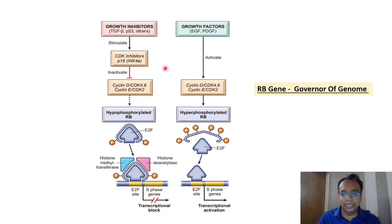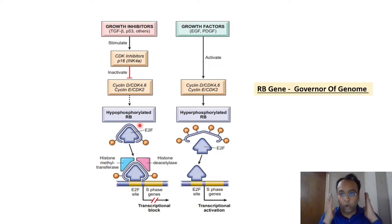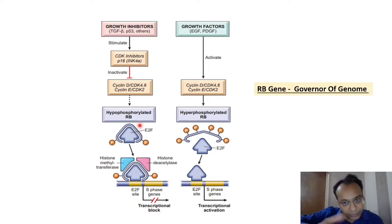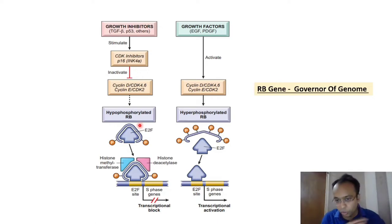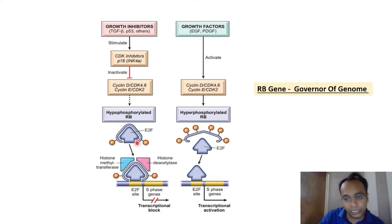So if Cyclin D and E are inhibited by cell cycle inhibitors, cell cycle movement cannot occur because the RB gene stays hypo-phosphorylated, keeping E2F sequestered. The key to cell cycle movement is thus in the hands of the RB gene. That is why RB gene is known as the 'governor of genome' — it is a tumor suppressor gene, and if inhibited, the control over the cell cycle is lost and cancer can develop.